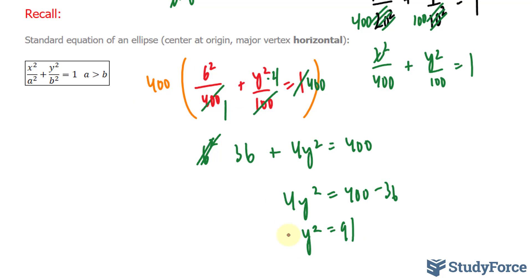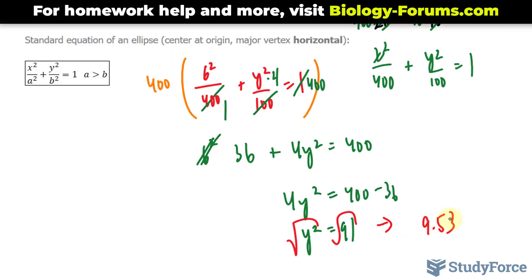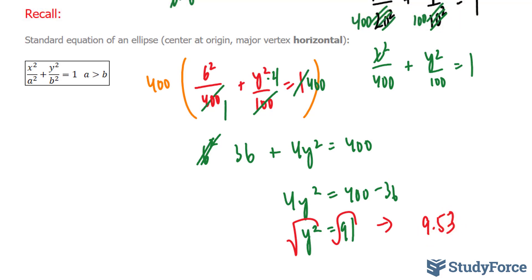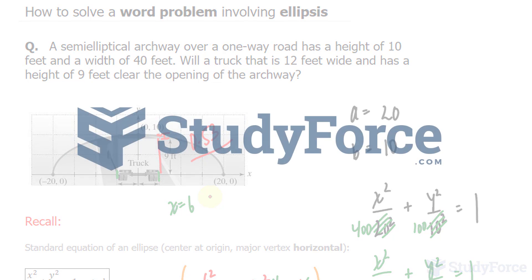Taking the square root of both sides, the square root of 91 is roughly 9.53. This means that as the truck is passing through, the height clears the height of the truck by 0.53 feet. Therefore, the truck will be able to pass through the opening of the archway. That is how to solve a word problem involving ellipses.